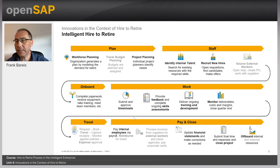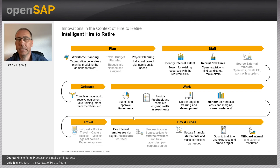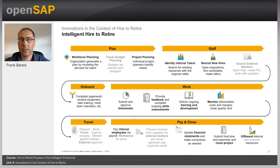As a recap, as you can see here, the light gray parts are taken out of the Recruit to Retire process because they belong to other sub-processes. What you can see in dark font here is the extract that belongs to the Hire to Retire sub-process of Recruit to Retire.